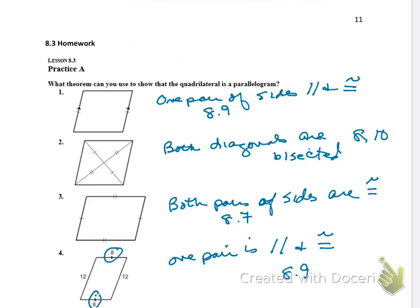Okay, so the first one is the fact that you have a pair of sides that are parallel and congruent, and that's 8.9. The second one, both diagonals are bisected, and that's theorem 8.10.